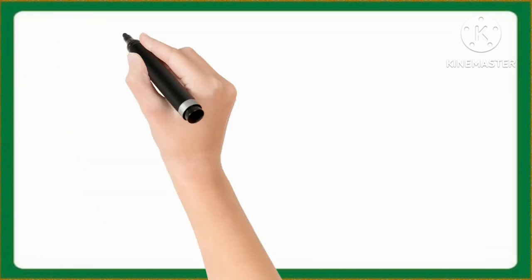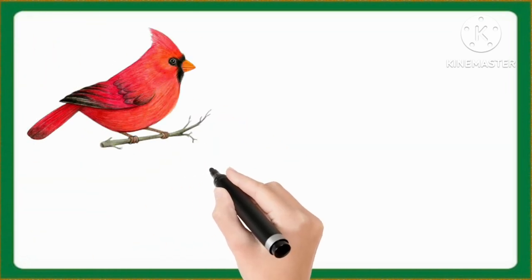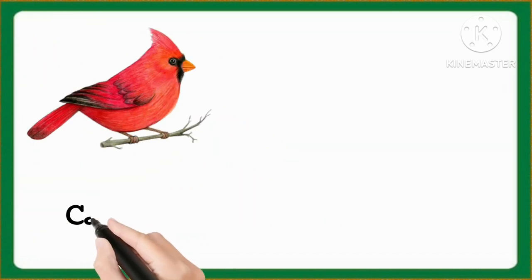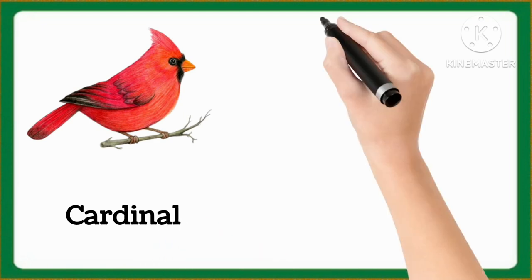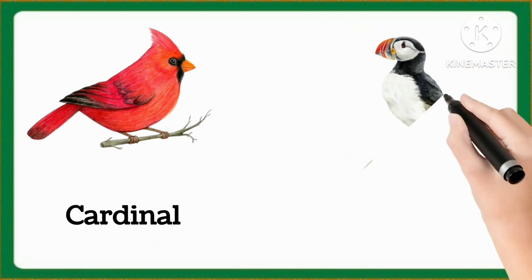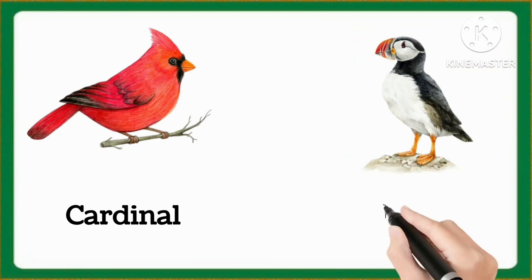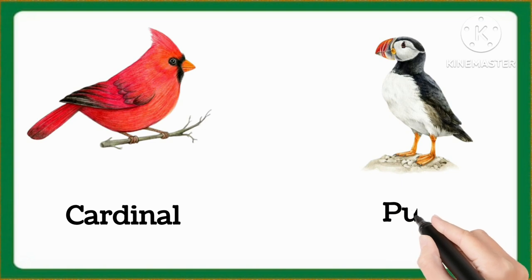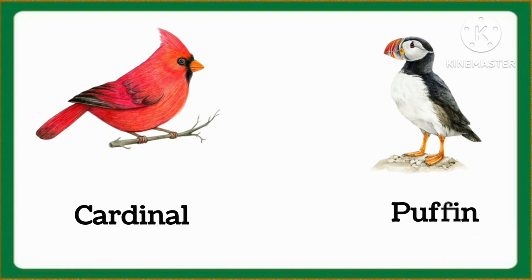And now tell me, which word is this, kids? This is hen. This is cardinal. Cardinal. And which word is this, kids? This is puffin. Puffin.